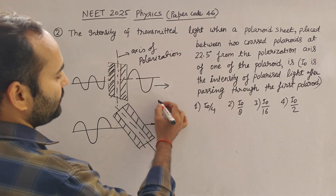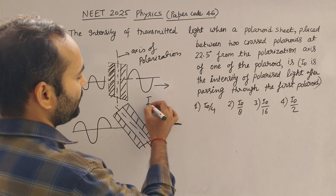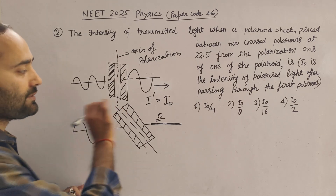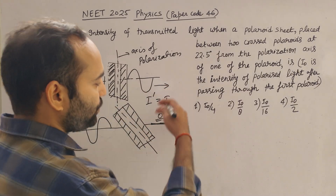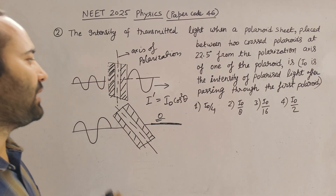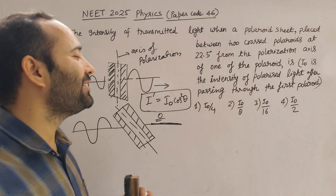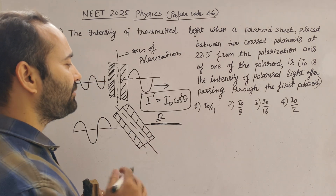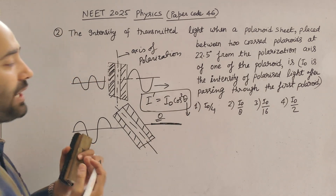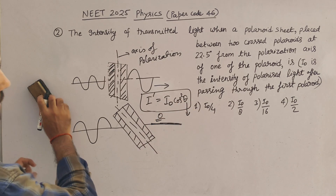So the basic fundamental principle is this. Now, in general, according to the law — which comes from derivation — after polarization, I prime, let's say, is I naught (the incident intensity) times cos squared theta. Now, every NEET aspirant knows this formula. You will rarely find anyone who does not know this formula. But if you start asking what theta is, the number will reduce. Very few of them have a clear understanding of theta. That's where they fail in doing the questions.